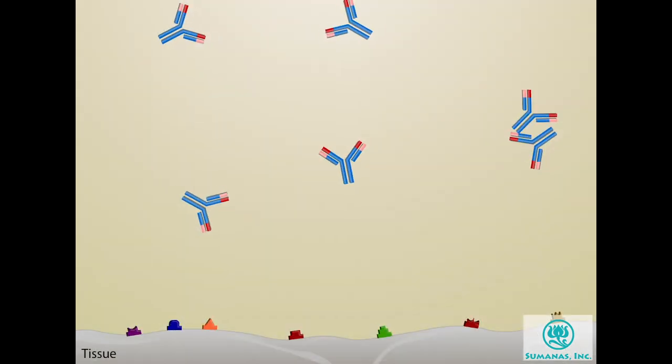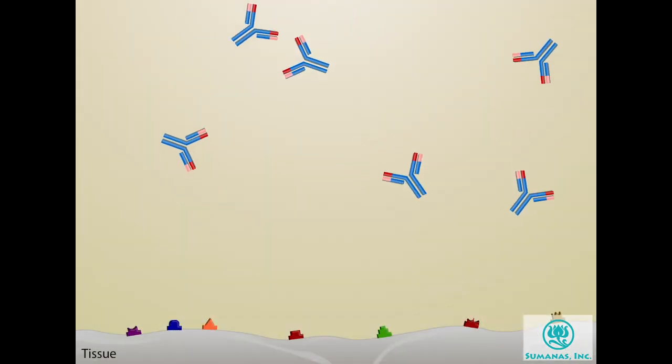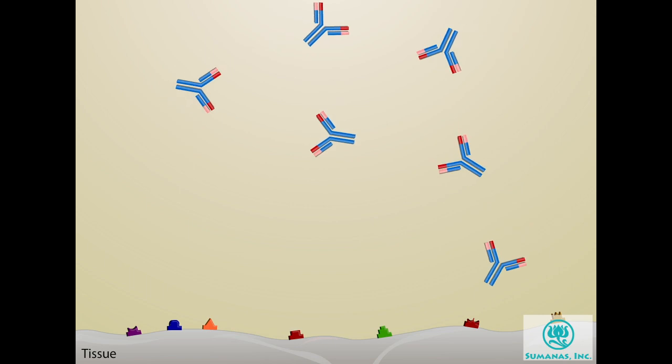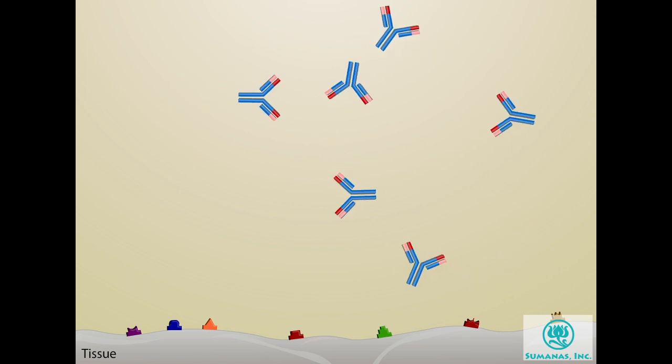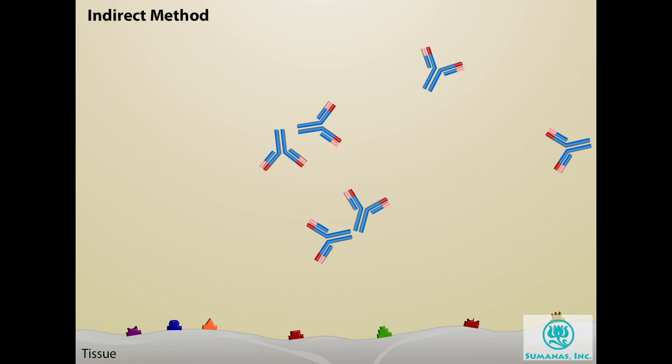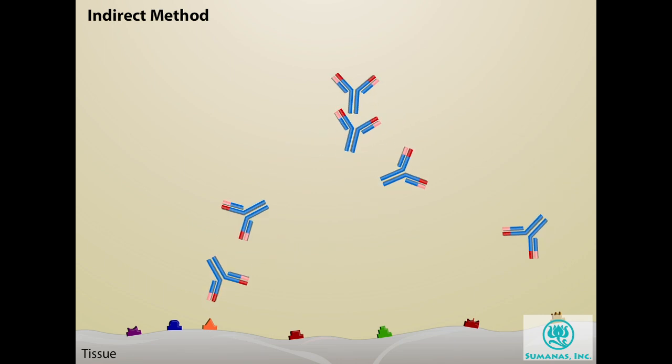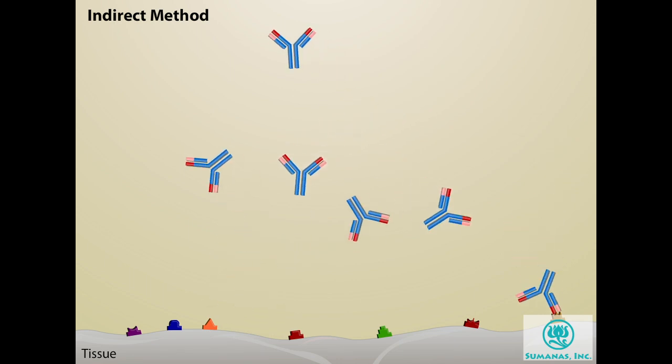When we use antibodies as probes to detect specific molecules, we frequently want to amplify the signal by using a procedure called the indirect method. In this method, an unlabeled antibody called the primary antibody is first added.